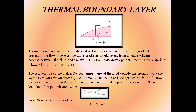The thermal boundary layer is defined as the region where temperature gradients are present in the flow. These temperature gradients result from heat exchange between the fluid and the wall. This boundary develops until the ratio of (T - Tw) upon (T∞ - Tw) equals 0.99. The temperature of the wall is Tw and the thickness of the thermal boundary layer is designated as delta T. At the wall, the velocity is zero and heat transfer into the fluid takes place by conduction. Thus, the local heat flux per unit area is: Q/A = -K × (∂T/∂y) at the wall.